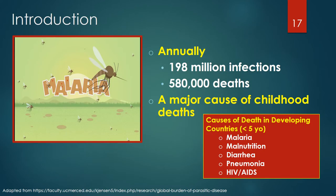Malaria infects approximately 198 million people, resulting in over 580,000 deaths annually. Malaria is one of five major causes of death in children under 5 in developing countries — malaria, malnutrition, diarrhea, pneumonia, and HIV-AIDS. In the Gambia from 1960 to 1990, one out of every 25 children under 5 years old died of malaria.